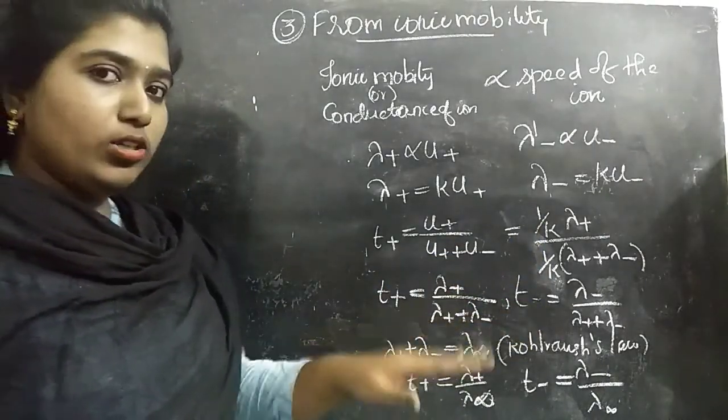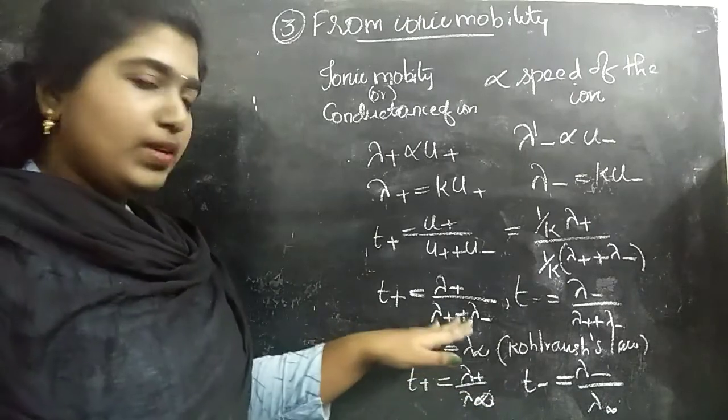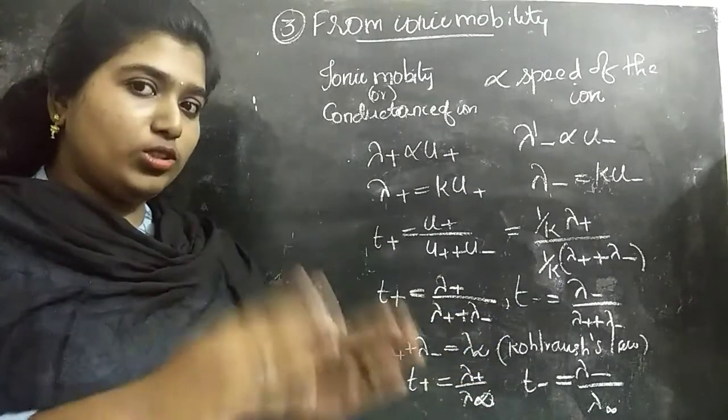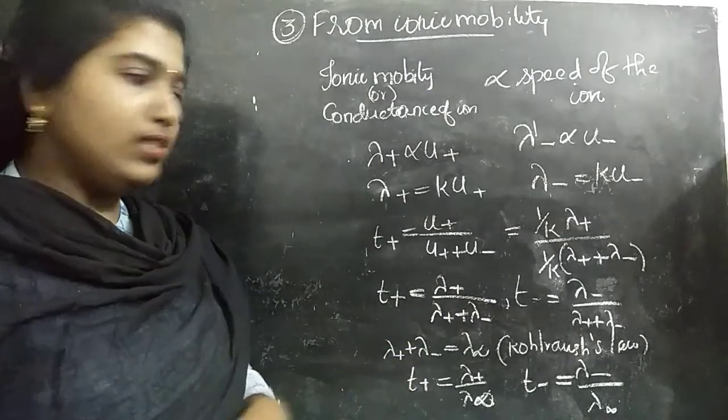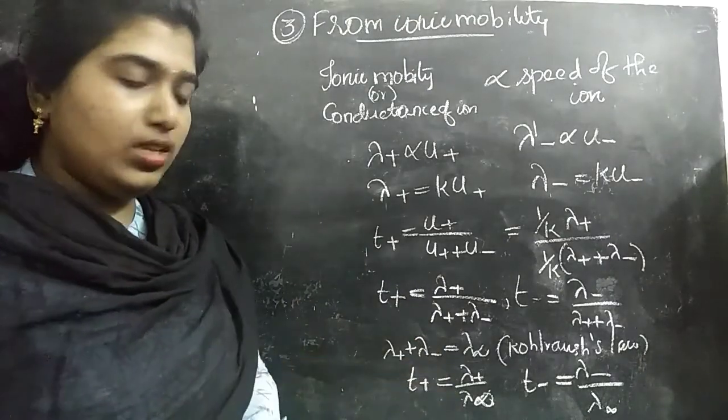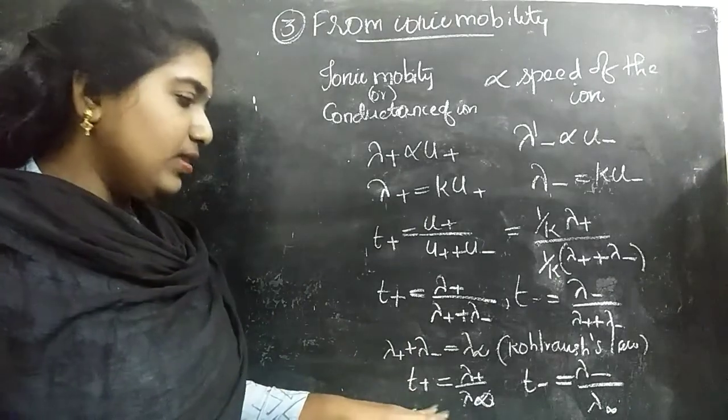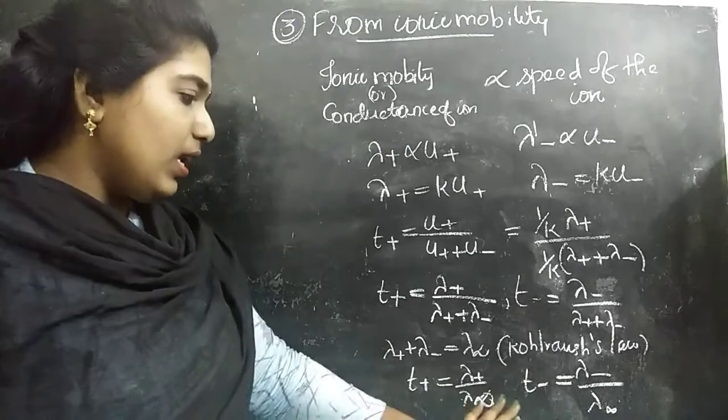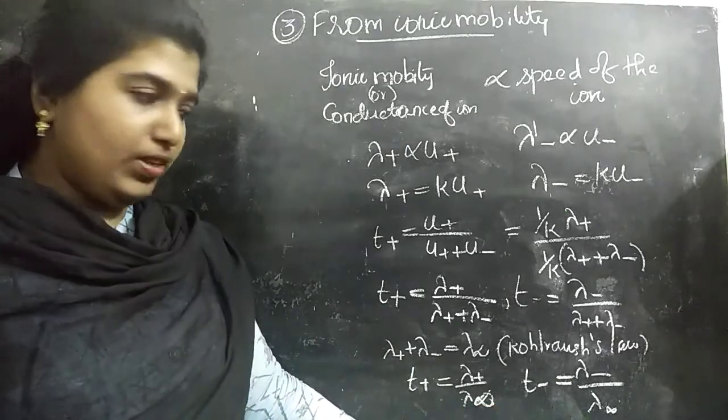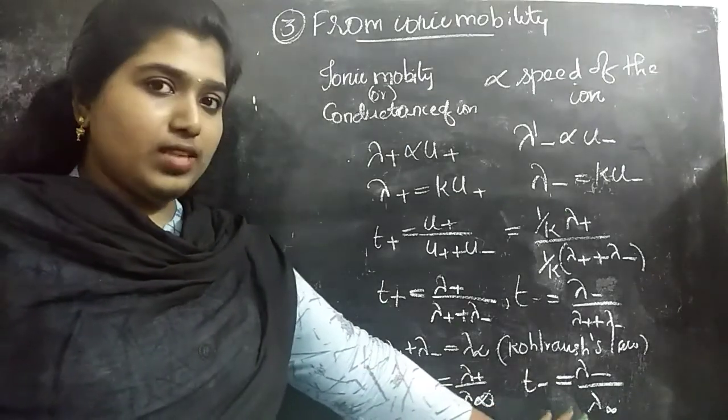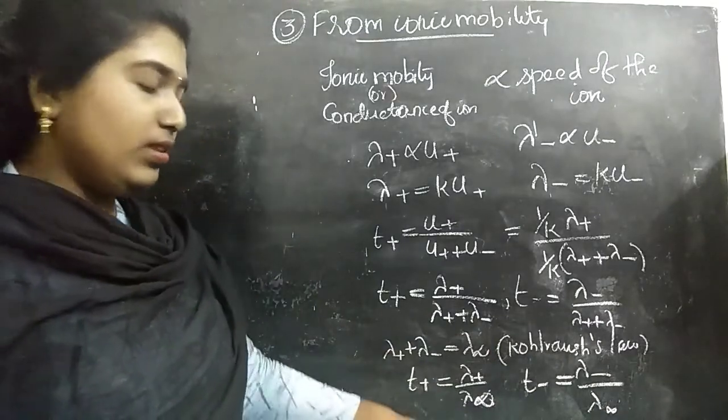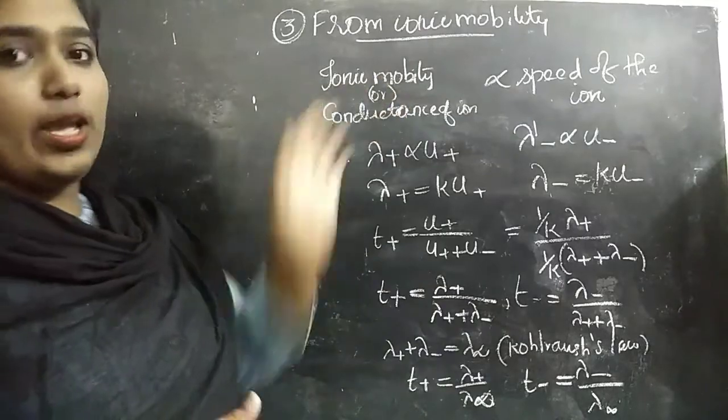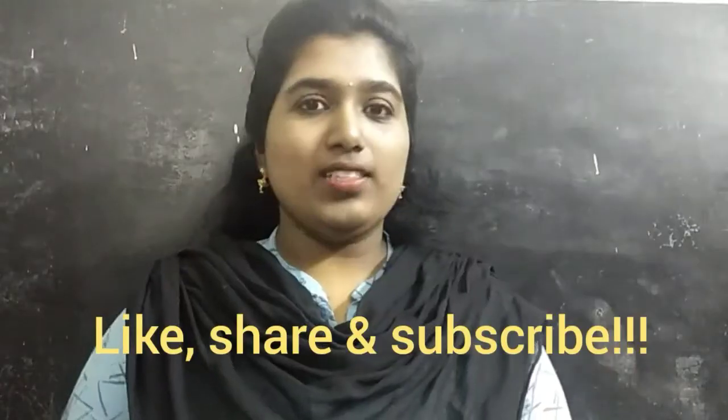According to Kohlrausch's law, lambda+ plus lambda-, that is the conductance of the cation and the anion together, is equal to the infinite conductance, that is lambda infinity. So we can write the transport number T+ by using conductivity values as follows. T+ is lambda+ by lambda infinity and T- is lambda- by lambda infinity. Using these equations we can calculate the transport numbers from the conductance of the ionic mobility.